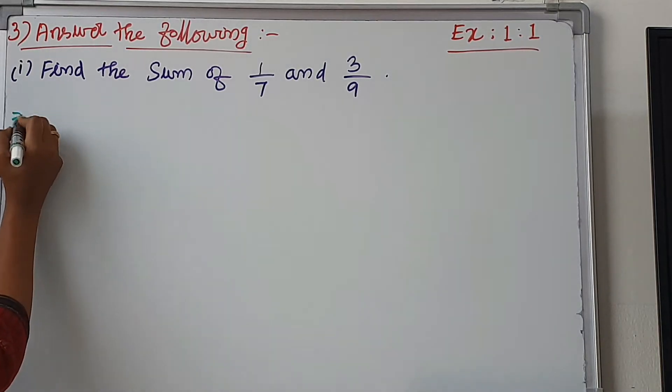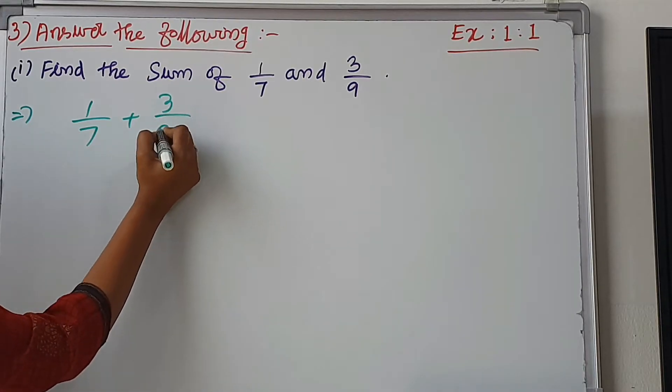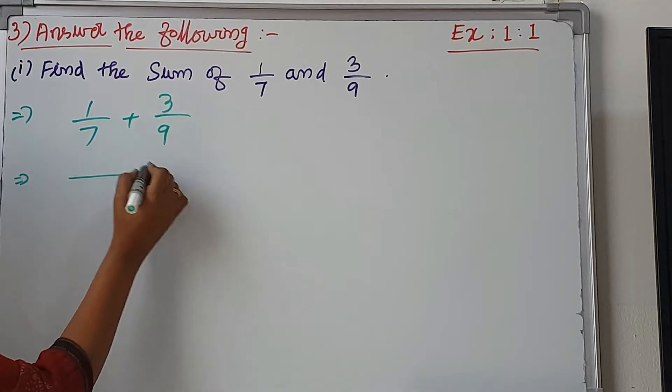For fraction addition, we have 1/7 plus 3/9. The denominators are different, so we find the LCM.